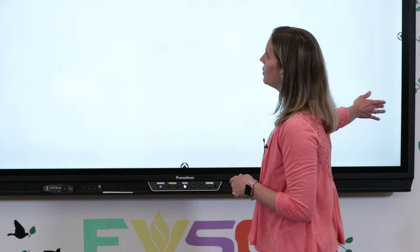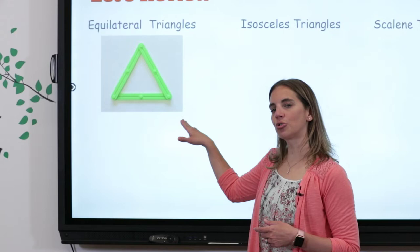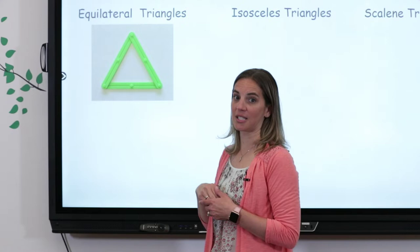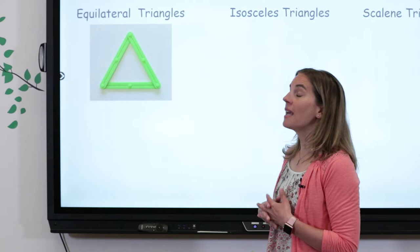Last time when we talked about triangles we talked about three new vocabulary words — three kinds of triangles. Let's see if you remember those words. We talked about equilateral triangles, isosceles triangles, and scalene triangles. I brought in my angle legs that helped us with these triangles. This was the equilateral triangle — it had three sides just like every triangle, but what did we remember about those three sides?